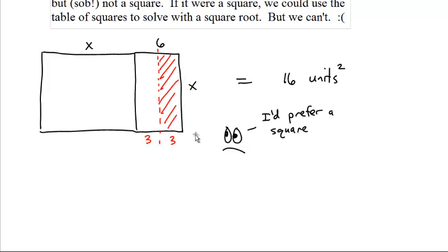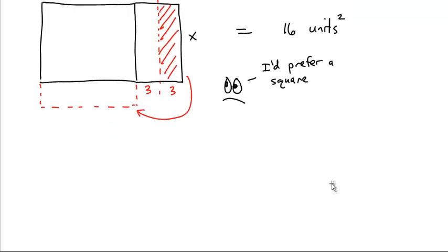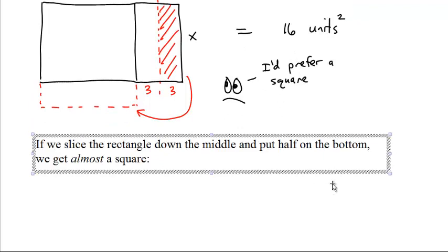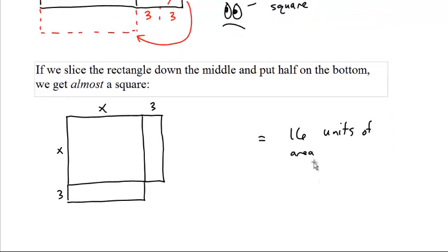You take the second one and scoop it around to underneath. That will make it square-ish. If we slice it down the middle, we get almost a square.